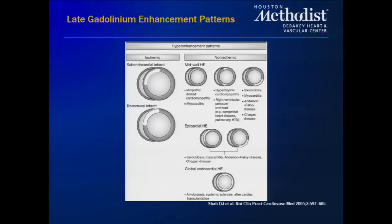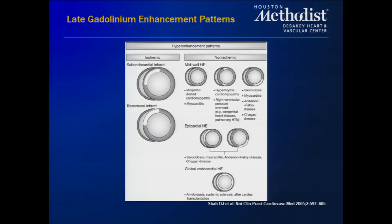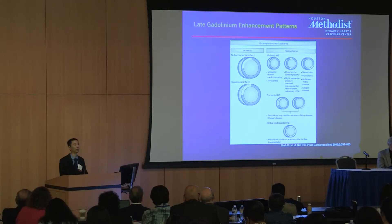Late gadolinium enhancement has been expanded beyond viability assessment in myocardial infarction to look for different scar patterns. Classic scar patterns are associated with myocarditis, sarcoidosis, hinge point scar with hypertrophic cardiomyopathy and RV pressure overload. Diffuse subendocardial enhancement has become pathognomonic and diagnostic of advanced cardiac amyloidosis. This also has procedural implications, helping interventional doctors with endomyocardial biopsies by identifying high-yield regions such as a specific area of the septum.